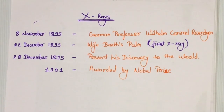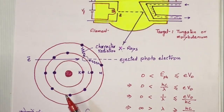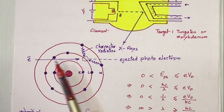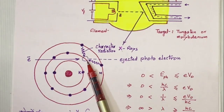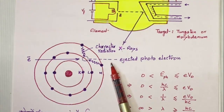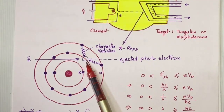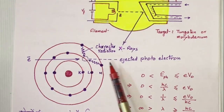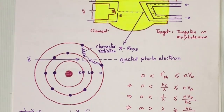According to the Bohr model, electrons revolve around the nucleus in circular orbits. If a highly energetic electron collides with an orbiting electron, it may knock it out, creating a vacancy. Nearby electrons then approach to fill this vacancy, releasing their extra energy in the form of electromagnetic radiation — and this radiation is known as X-rays. The photoelectric effect and X-ray production are inverse processes of each other.